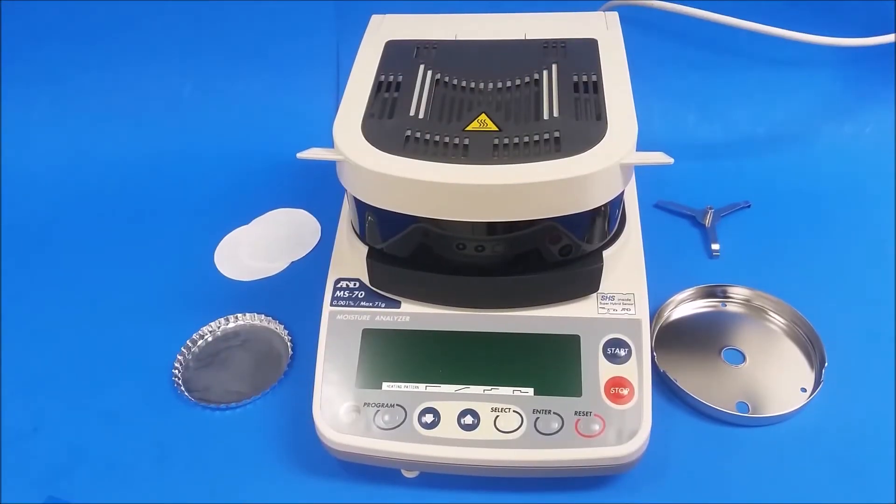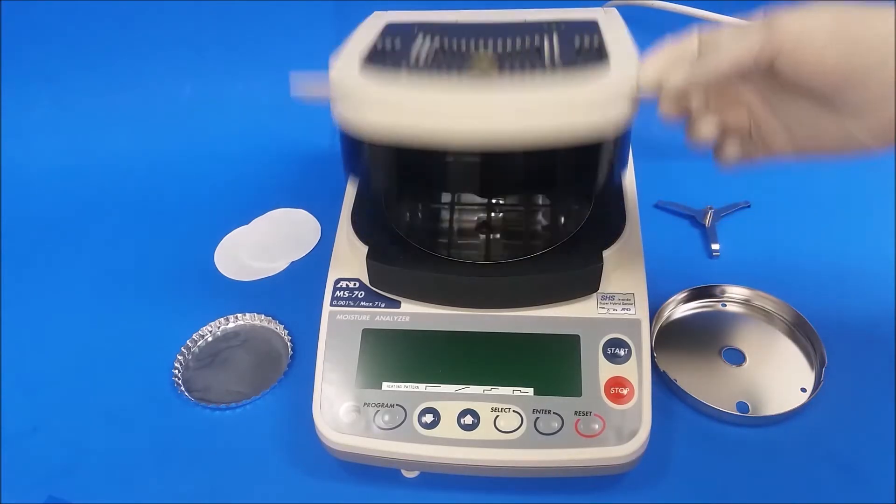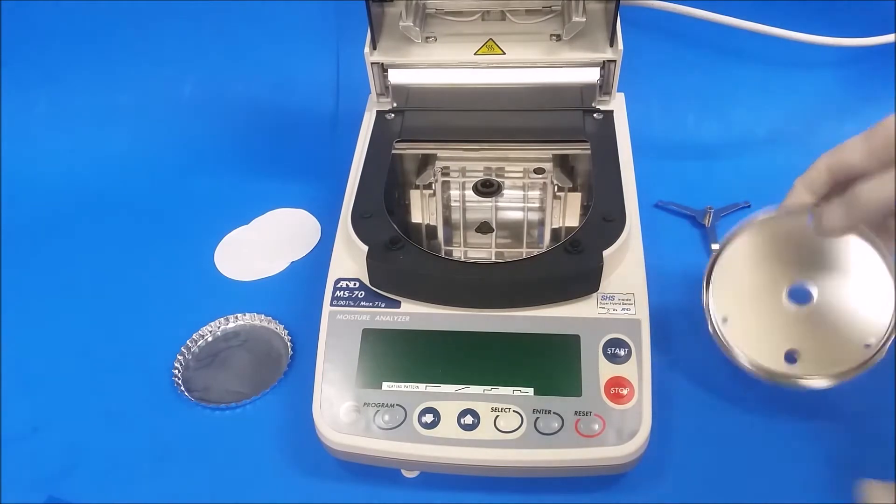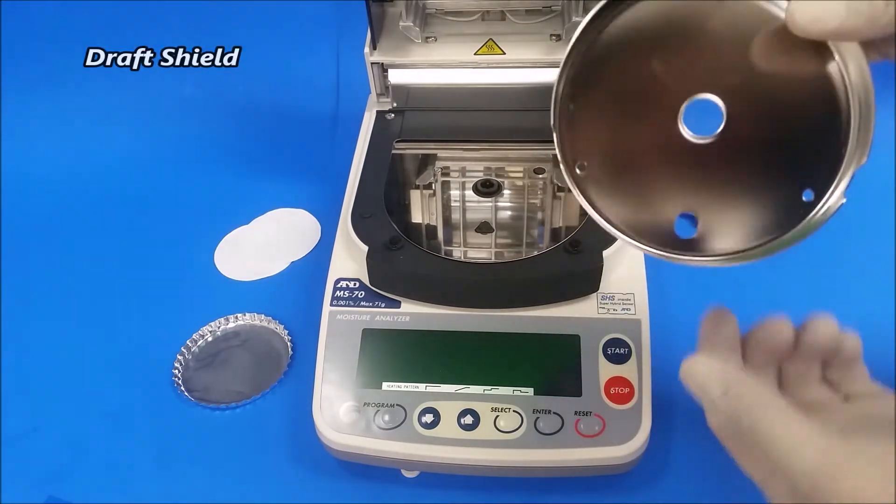Hello everybody, DSC guy here. Today I'm going to show you how to run a test on your AMD MS-70. First we're going to put in its parts. The first piece will be the draft shield. There's a little hole down here that should match on this little dot here.